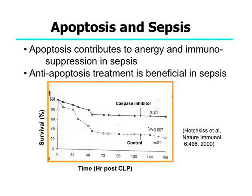We know that sepsis causes lymphocyte apoptosis, and apoptosis contributes to anergy — meaning cells do not respond to stimuli — and consequently immunosuppression, which is seen in sepsis. Many studies have shown that anti-apoptosis treatment is beneficial in sepsis.